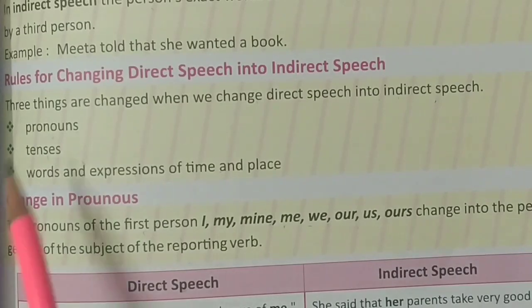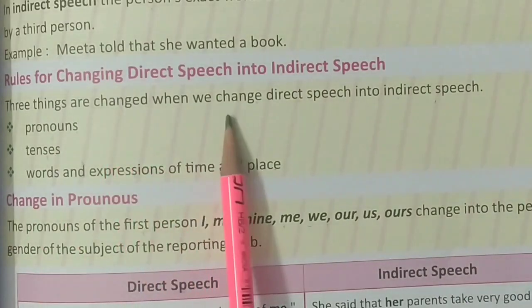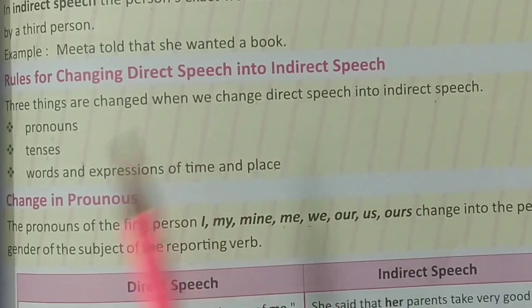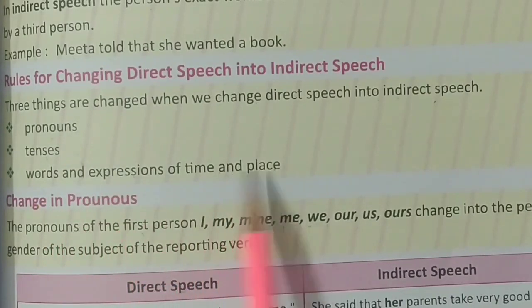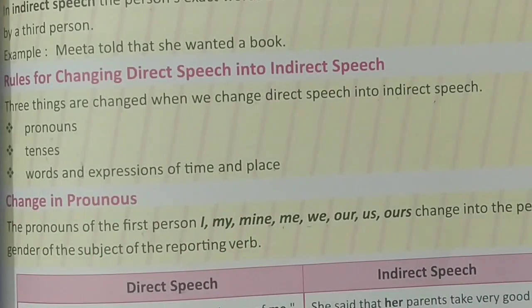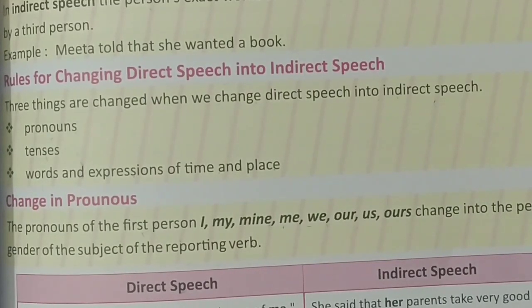So I hope all of you have understood the rules for changing direct speech into indirect speech. We need to follow all three rules to convert direct speech into indirect: pronouns, tenses, and words and expressions of time and place. These three things are very important, so when we look at any direct speech sentence, we must keep these three in mind. First, check what tense the reporting verb is in and change accordingly. I have also told you some exceptions, which you must follow. So I hope all of you have understood — please practice it and try to learn it.